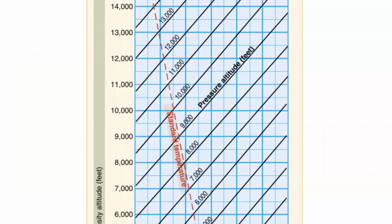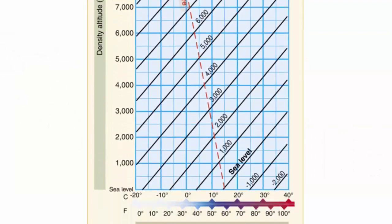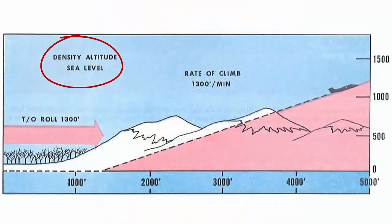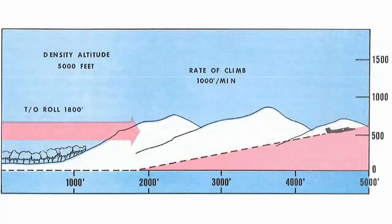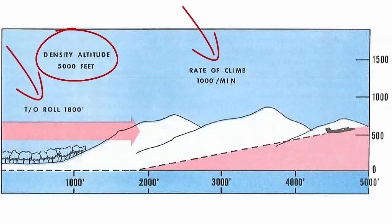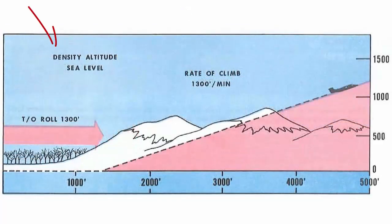Density altitude is defined as pressure altitude corrected for nonstandard temperature. As the density of the air increases, aircraft performance increases. And conversely, as air density decreases, aircraft performance decreases. A decrease in air density means a high density altitude. An increase in air density means a low density altitude.